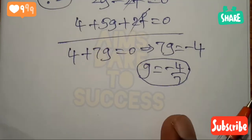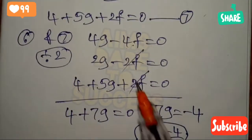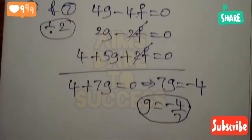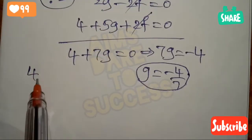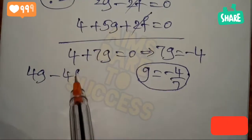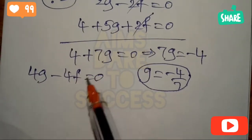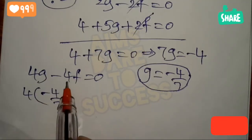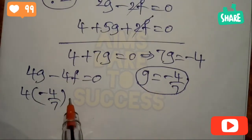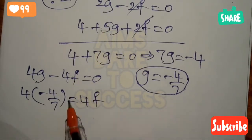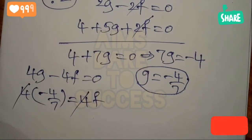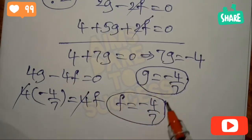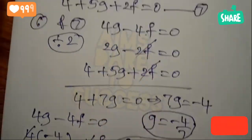To find f, substitute g = -4/7 into equation 6: 4g - 4f = 0. So 4(-4/7) = 4f, meaning 4 and 4 cancel, giving f = -4/7. So both g and f equal -4/7.